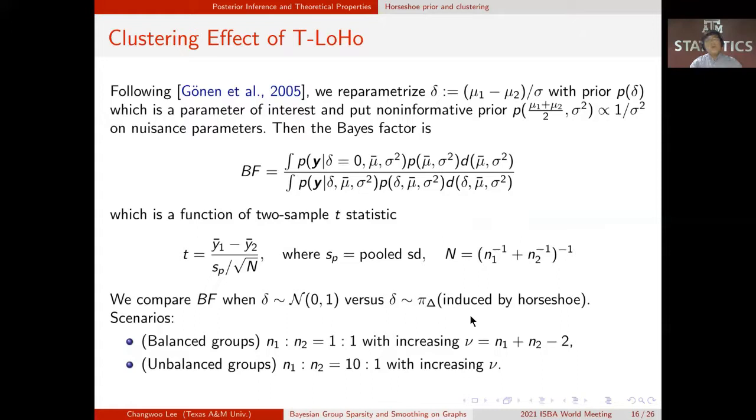So following the procedure of Bayesian two-sample t-test, we put a prior on the standardized difference, delta, which is our parameter of interest, and put non-informative prior on the nuisance parameters. Now, the Bayes factor is a function of two-sample t-statistic. We compare Bayes factor equivalently to the likelihood ratio L when delta has normal prior and delta has pi delta prior, which is induced by horseshoe.